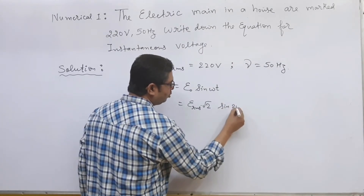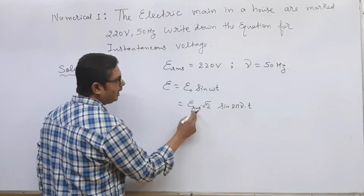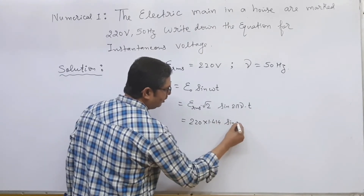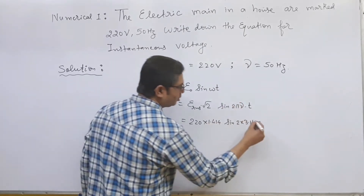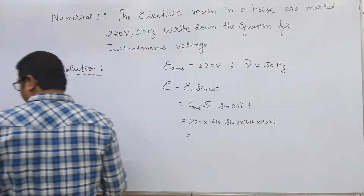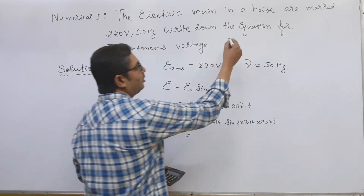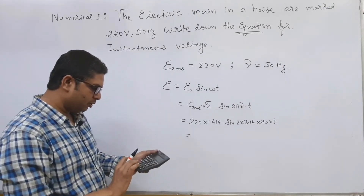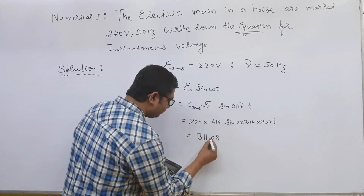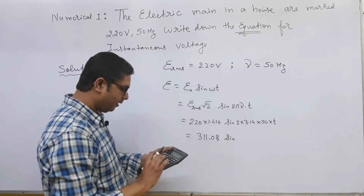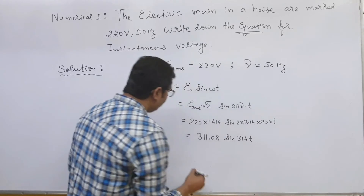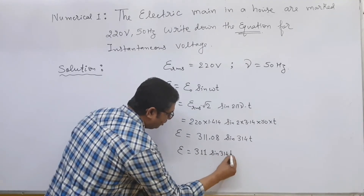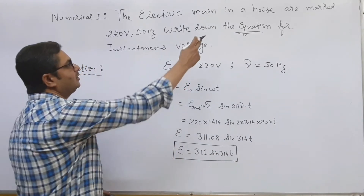We also know that ω equals 2πν. Putting in the values: E_RMS is 220 and √2 is 1.414, so E₀ equals 220 × 1.414 equals 311.08 V. And ω equals 2 × 3.14 × 50 equals 314 rad/s. Therefore, the equation for instantaneous voltage is E equals 311 sin 314t, or approximately E equals 311 sin 314t volts.